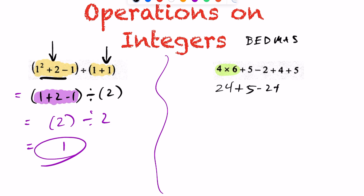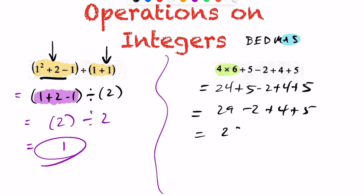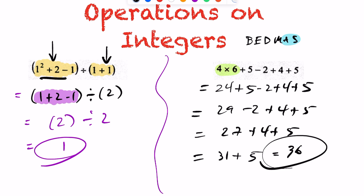So we have 24 plus 5, minus 2, plus 4, plus 5. At this point, addition and subtraction — you can do that in any order; it makes no difference. Typically, when using BEDMAS, you just go from left to right since you're left with only addition and subtraction. Going left to right: 29 minus 2 is 27, plus 4 is 31, plus 5. Our final answer for this one is 36.